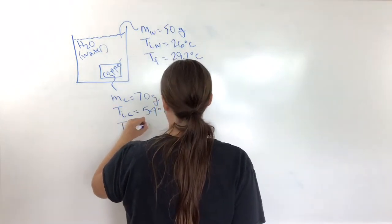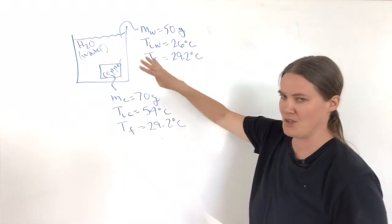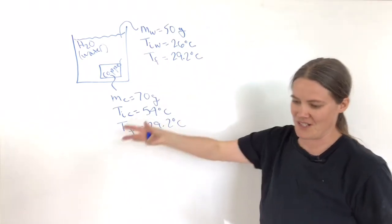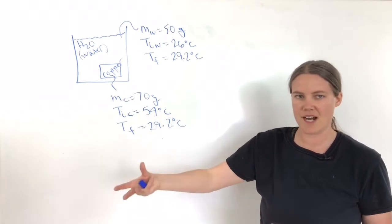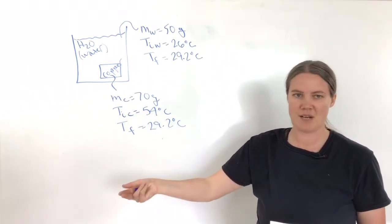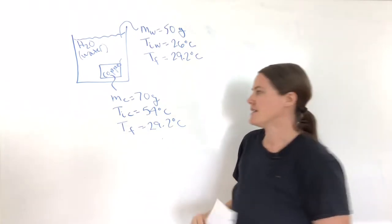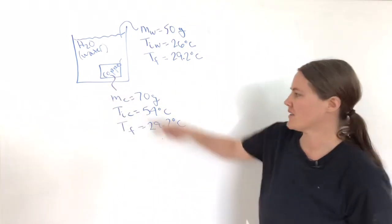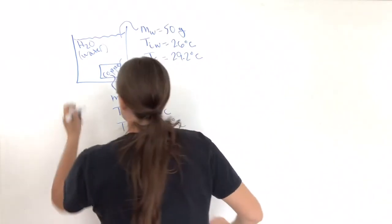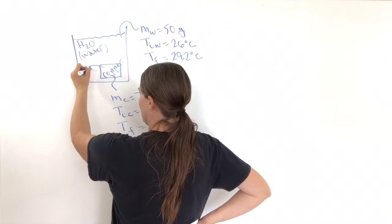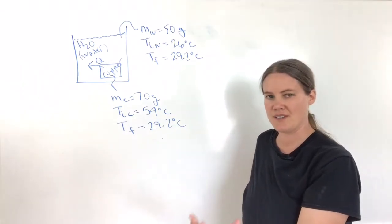The final temperature is 29.2 degrees Celsius, and notice it's the same for both the water and the copper. That makes sense — if you put a hot cup of tea on the counter, it's going to lose heat until it's the same temperature as the room. The copper will change temperature until both the copper and the water are the same temperature. Since the copper is cooling off, it's losing heat.